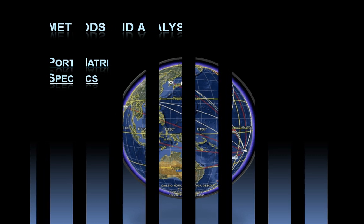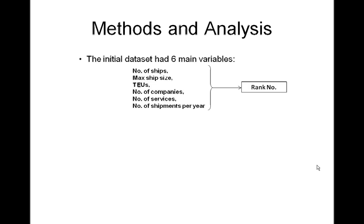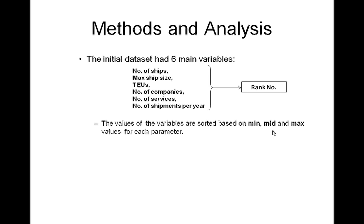In referring to the methods and analysis, the initial dataset had six main variables: number of ships, the maximum size of the container ship, TEUs — which refers to 20-foot equivalent units — the number of shipping companies involved in the trade, the number of services working in the trade, and the number of shipments per year that have been calculated and recorded. The values of the variables are sorted based on mean, mid, and max for each parameter.